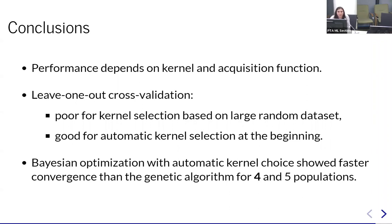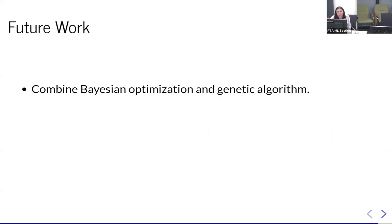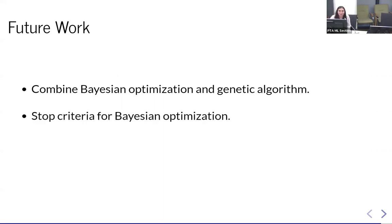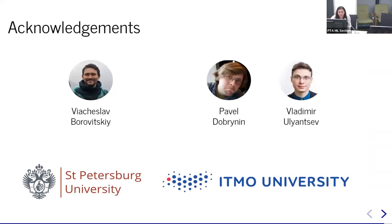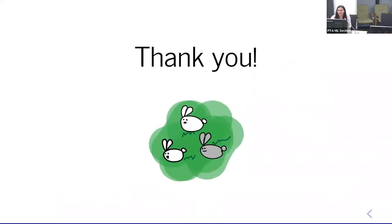In conclusion: performance of Bayesian optimization depends on kernel and acquisition function selection. Leave-one-out cross-validation works poorly for large random datasets but works well for automatic kernel selection at the start of optimization. Compared to genetic algorithm, Bayesian optimization gives great results for four and five populations. Future work includes exploring whether to combine Bayesian optimization with the genetic algorithm, defining a proper stopping criterion instead of a fixed 200 iterations, and running experiments on real biological data rather than simulations. Thanks to Slava and colleagues at ITMO University.